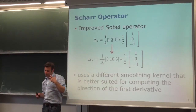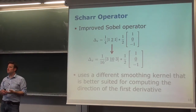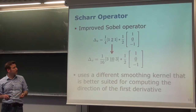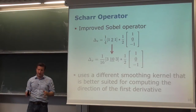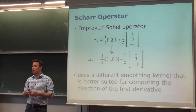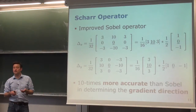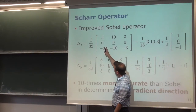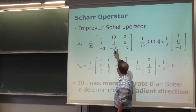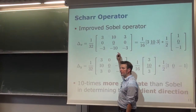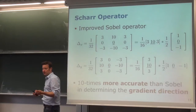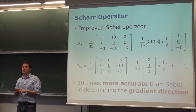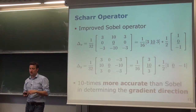We can define a Sobel-like operator with a different smoothing function — using values 3, 10, 3 instead of 1, 2, 1. The gradient computation stays the same; only the smoothing changes. This leads to the so-called Scharr operator. The Scharr and Sobel operators are identical in structure, the only difference being the smoothing weights: 3, 10, 3 for Scharr versus 1, 2, 1 for Sobel, yielding better accuracy in gradient direction.